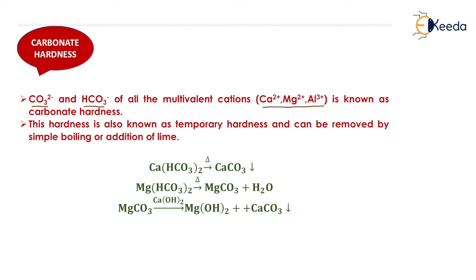Carbonate hardness is also known as temporary hardness and can be removed either by simply boiling the water or by the addition of lime. We will now see the reactions showing how carbonate hardness can be removed by heating or by the addition of lime.